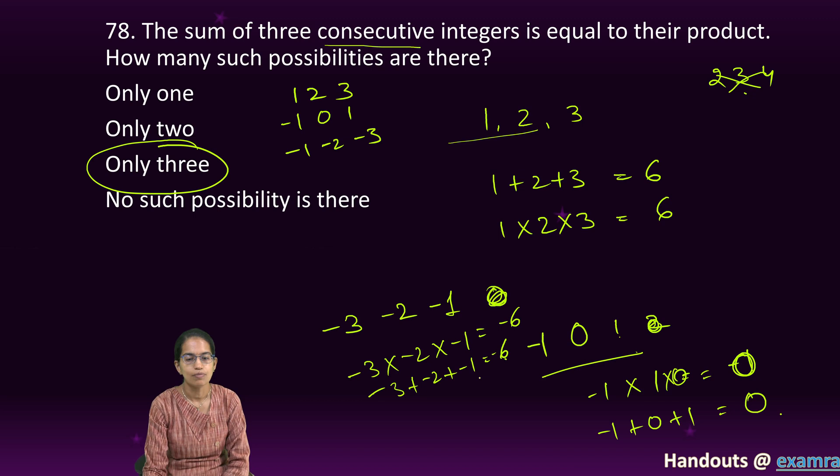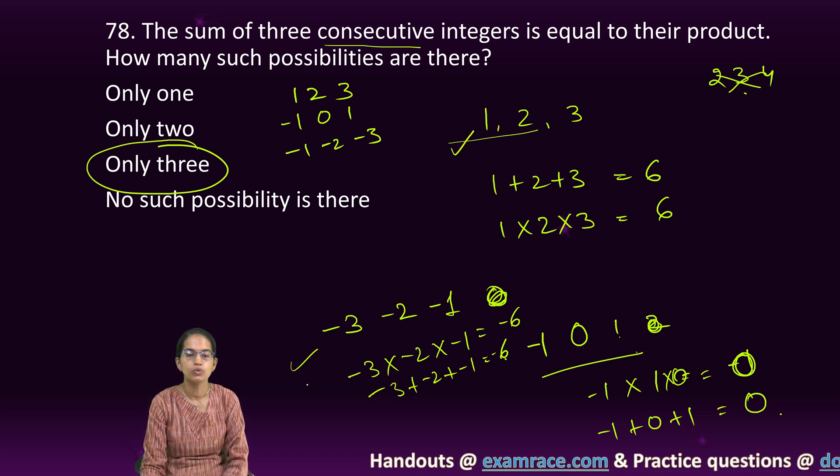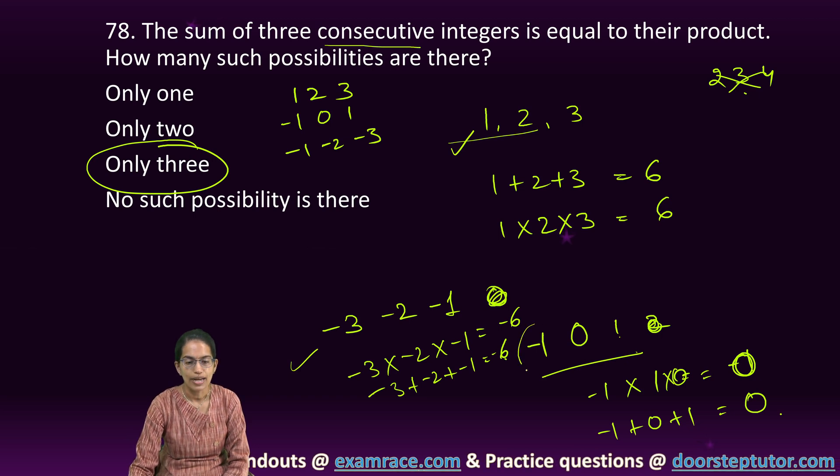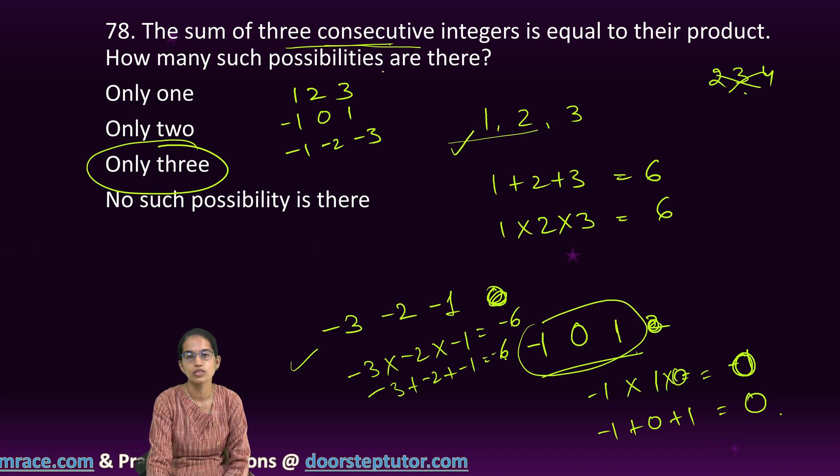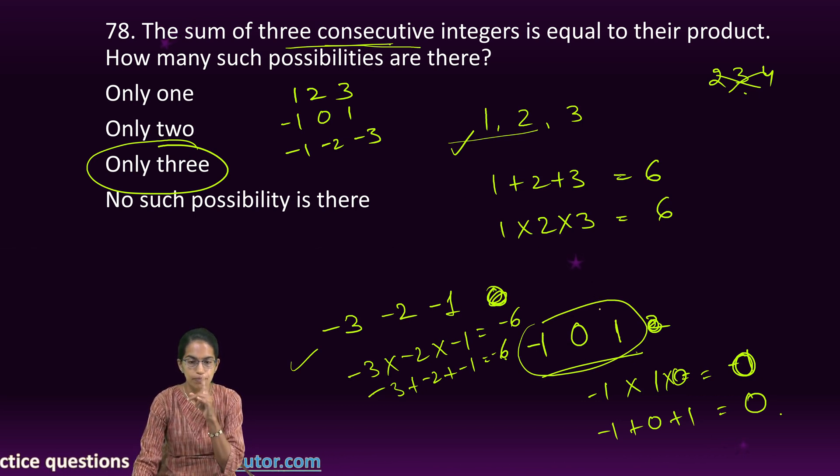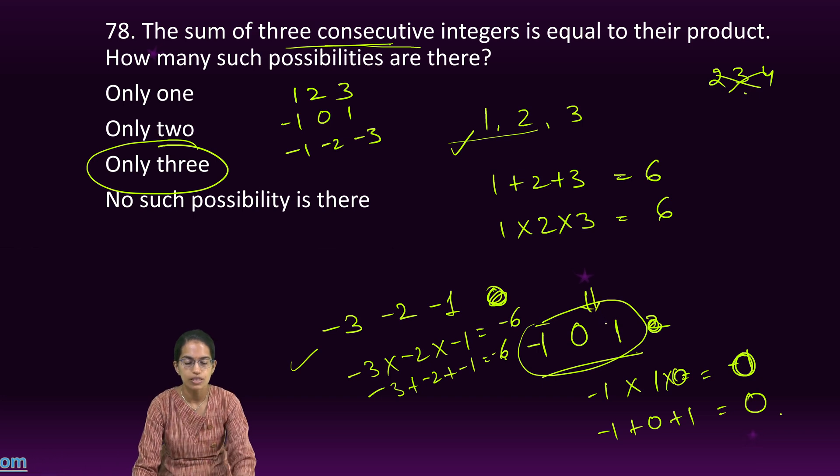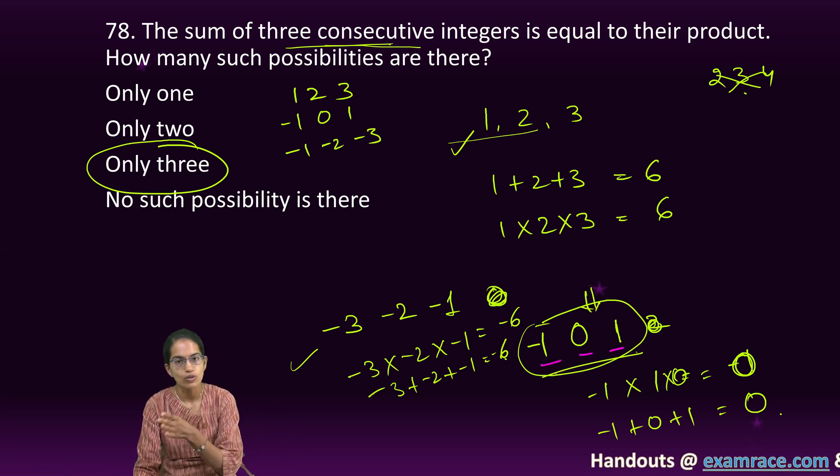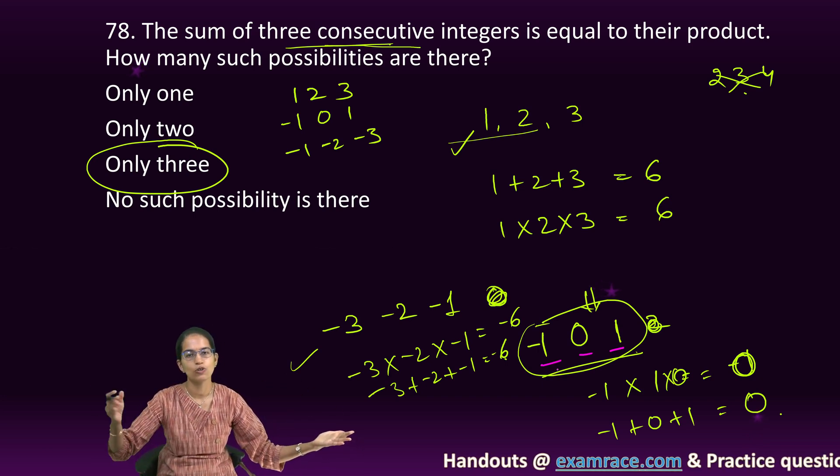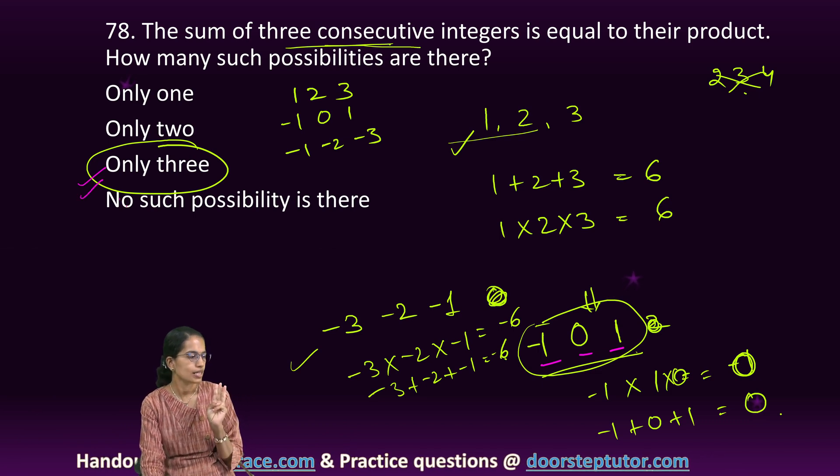Note, this question says they have to be 3 consecutive integers. It does not talk about repetition. Here there is no repetition of digits. It is 3 different digits which are consecutive. We start from minus 1, 0, and plus 1. So 3 possibilities can be there.